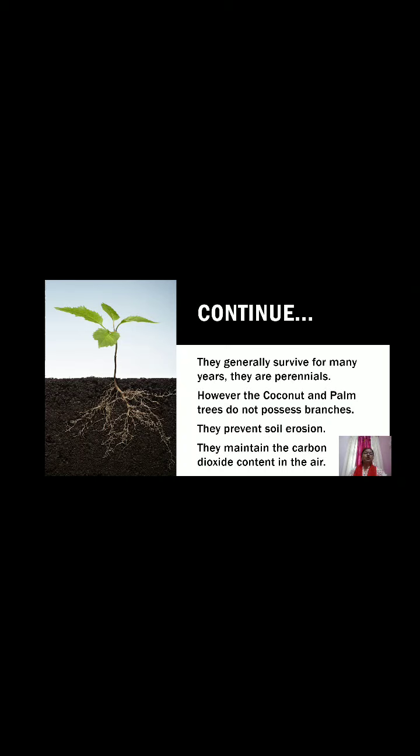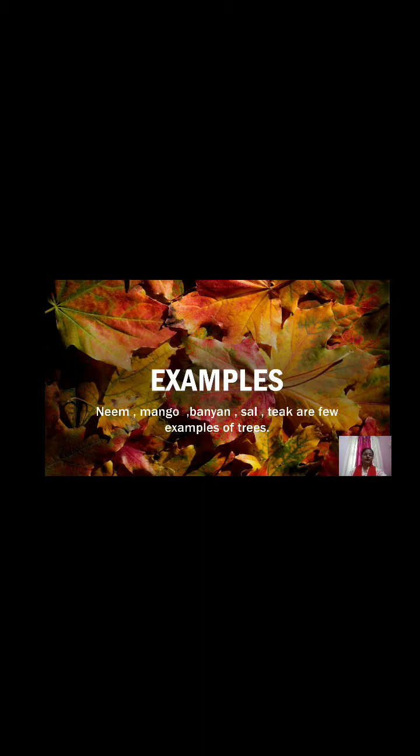Trees prevent soil erosion and maintain the carbon dioxide content of the air. These things are all about herbs, shrubs and trees. Examples of trees include neem, mango, banyan, sal, and teak.